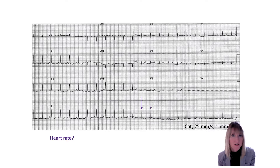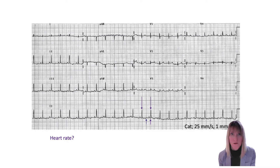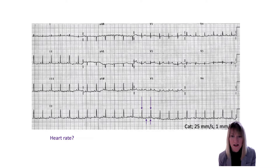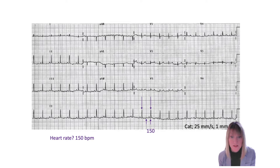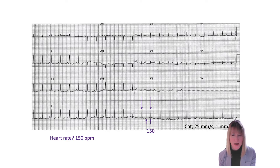If you remember, if the next heartbeat intersected the grid at the next dark line over, the heart rate would have been 300. In this case, the next heartbeat occurs on the second dark grid line over, and so the heart rate is 150. That's just using that instantaneous heart rate rule, knowing the paper speed and what each little box represents in terms of time. So 150 beats per minute for our cat — that seems pretty normal for a cat in hospital, and so that sets the tone of what rhythms I might be dealing with.